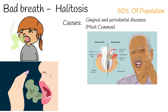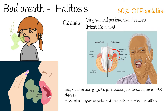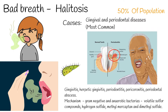The most common causes of halitosis are gingival and periodontal diseases: gingivitis, herpetic gingivitis, periodontitis, perichoronitis, and periodontal abscess. The main mechanism of halitosis is the accumulation of different gases generated by gram-negative and anaerobic bacteria from periodontal infections.